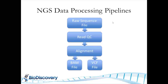This is a simplified NGS data processing pipeline where raw sequence files are the starting point. Then a filtering step happens where the QC of each read is evaluated and some might be thrown out. Then the alignment — a very crucial step — to a reference genome happens. At the end of this process you generally get a BAM file, which is an aligned sequence file, and then a variant call file or VCF file that can denote what the variants are.